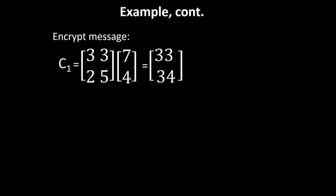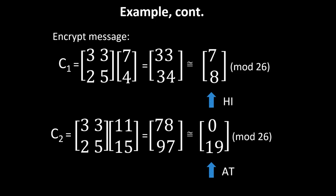We need to encrypt the message, starting with the first part. We have the matrix K times the vector P, which is the HE part. We multiply those, then take modulus 26. 33 modulus 26 is 7, 34 modulus 26 is 8. 33 minus 26 is 7, 34 minus 26 is 8. We map that resulting vector back to letters and get HI.